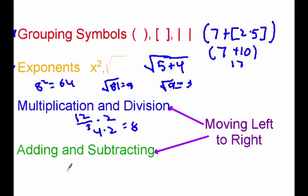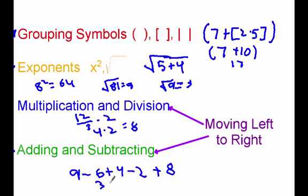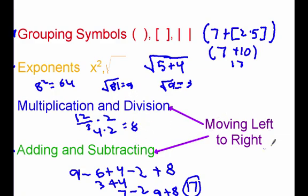The same goes for adding and subtracting, which is our last step. So if I gave you, for example, 9 minus 6 plus 4 minus 2 plus 8, I start with 9 minus 6, which is 3. Then I add 4, which gives me 7. Subtract 2, which gives me 9. And then add 8, which gives me 17. Multiplication and division, and adding and subtracting — we want to do both moving from left to right.